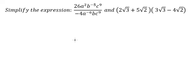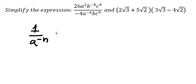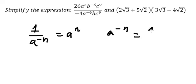Hey guys, welcome back to my channel. Today I will show you how to simplify this one. We know that 1 over 8 to the power of negative n equals 8 to the power of n. So in this one, 8 to the power of negative n equals 1 over 8 to the power of n.